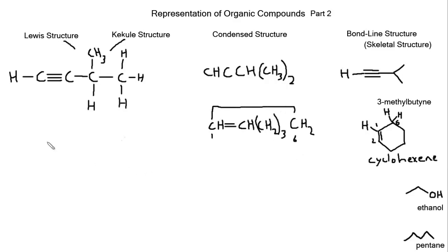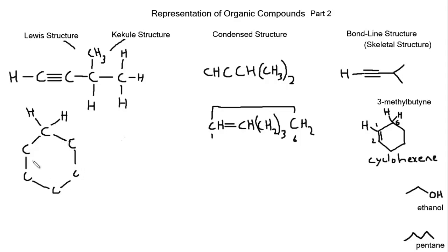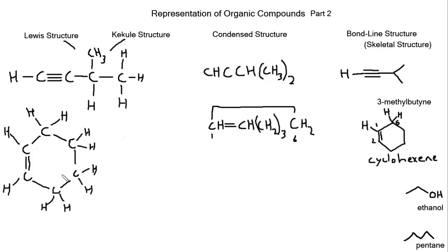For the Lewis structure, it's actually easier to draw because we simply draw the ring structure. Starting at carbon six and going around the ring, we draw all the carbons, then add the double bond between the two sp2 carbons. Each of those has one hydrogen attached, and the remaining CH2 carbons get their two hydrogens filled in. So there's the Lewis and Kekulé structure of cyclohexene — again, they're the same because there are no lone-pair-bearing functional groups.